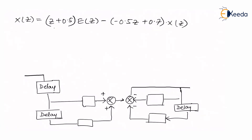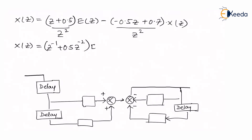Now the z squared term with X(z) has been divided. Starting the derivation once again: X(z) equals z inverse plus 0.5 z to the minus 2, the whole thing multiplied by E(z), minus 0.5 z inverse plus 0.5 z to the minus 2, the whole thing multiplied by X(z).